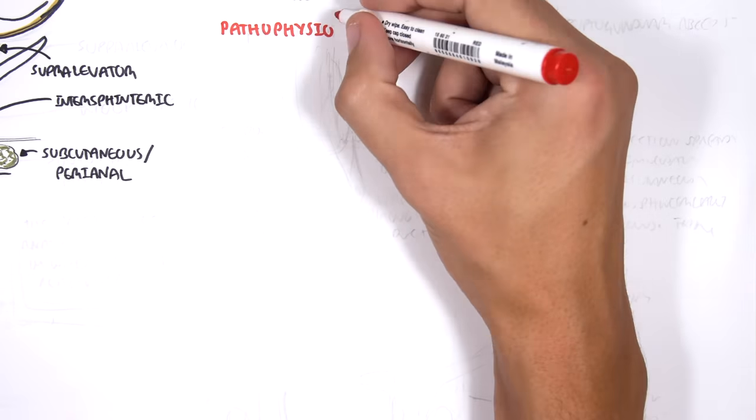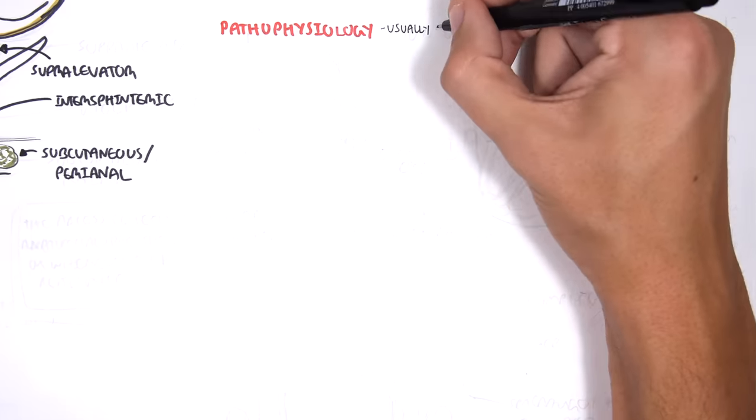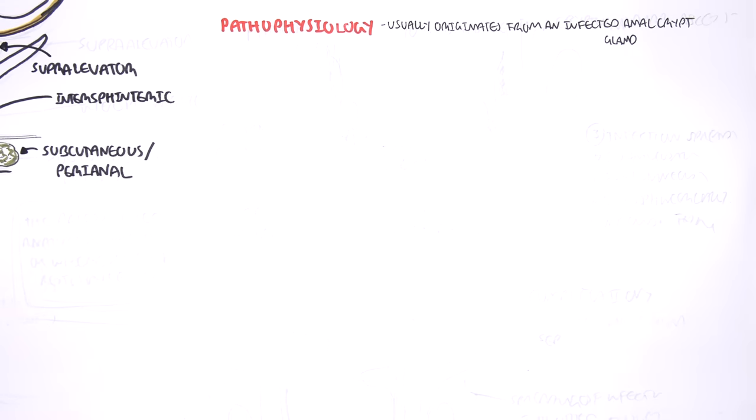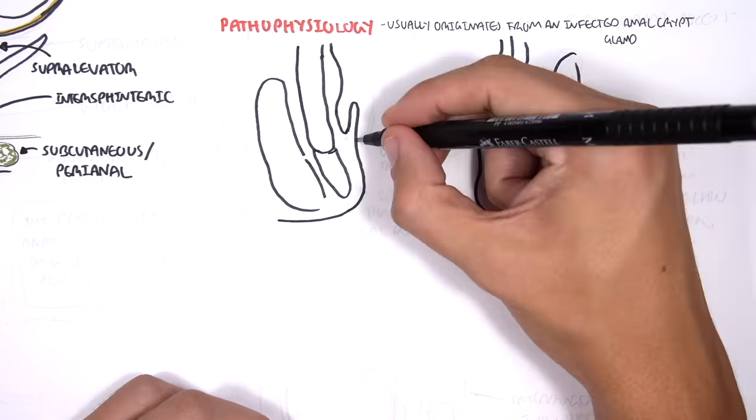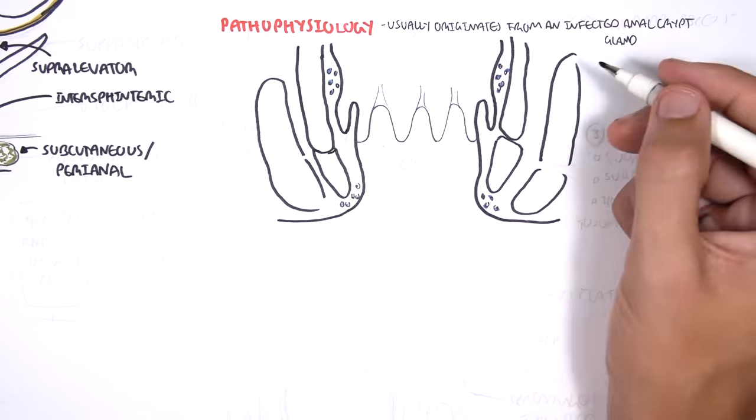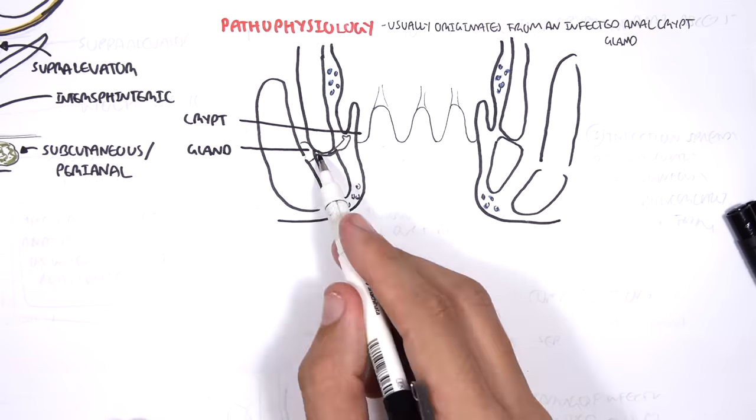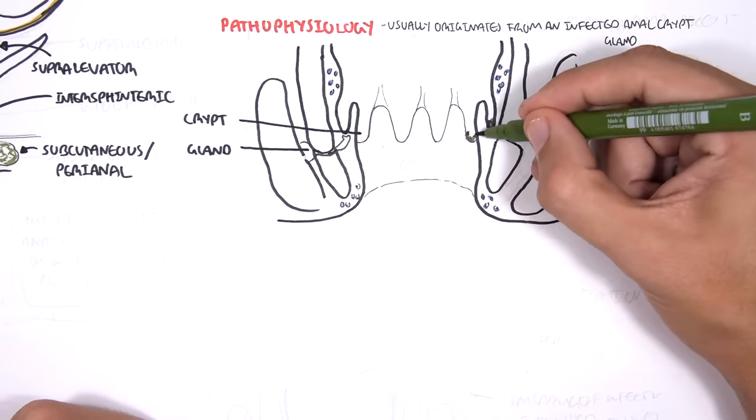The pathophysiology of anal abscess: anal abscess usually originates from an infected anal crypt gland. So here we have the crypt, and here we have the actual gland it connects to.